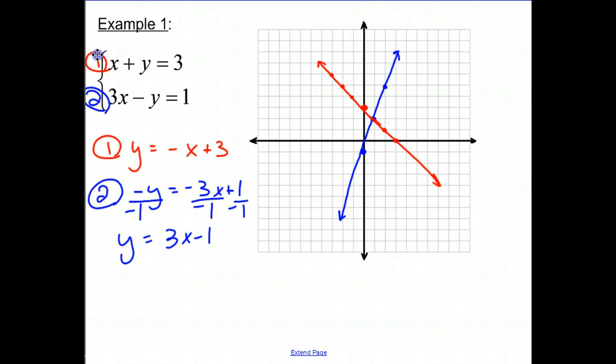That point of intersection, this point in which both these cross, that's my answer to my system. That's the x and y value that work for both equations. So in this case, that point is 1, 2. That's the solution to this system. These two equations both work for this x equaling 1 and y equaling 2.